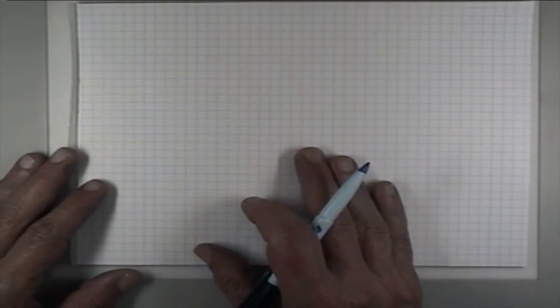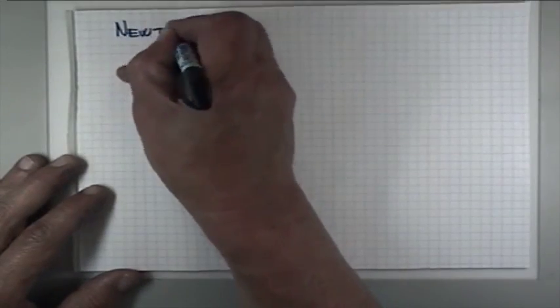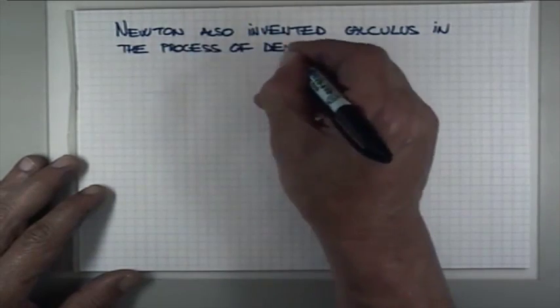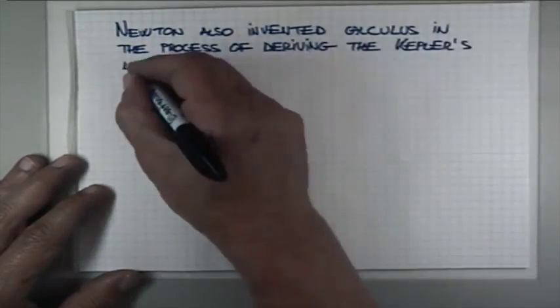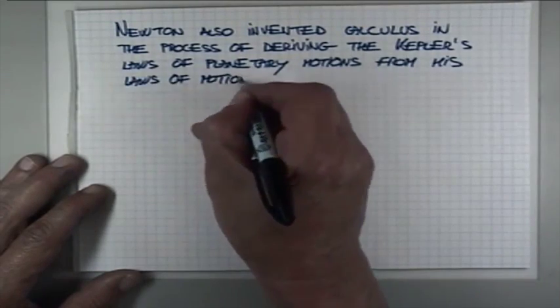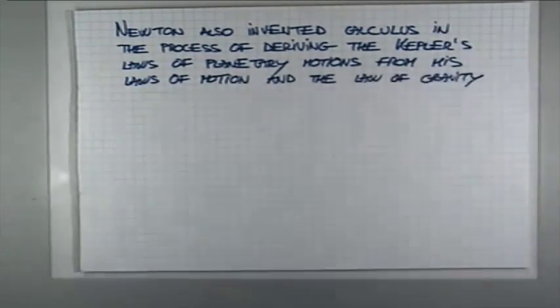So using calculus, he was able to derive Kepler's laws from his laws of motion and the law of gravity.